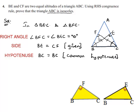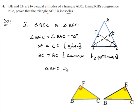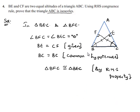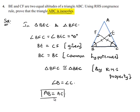Therefore, by the RHS property, we can say that triangle BFC is congruent to triangle BEC. When two triangles are congruent, their corresponding angles and corresponding sides will be equal. So, we can equate angle B in triangle BFC to angle C in triangle BEC. We also know that in a triangle, the sides opposite to equal angles are equal, so we can equate AB is equal to AC.